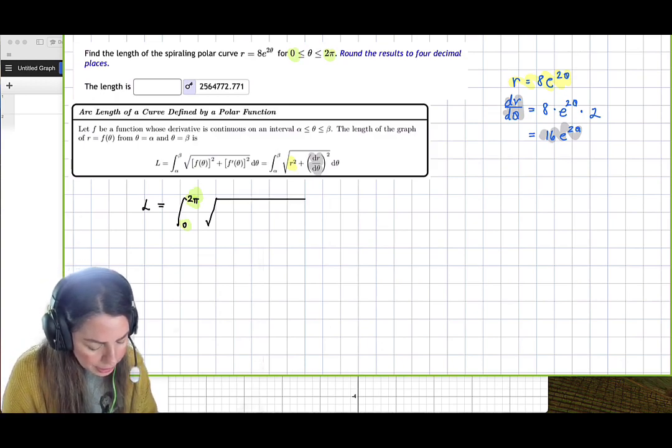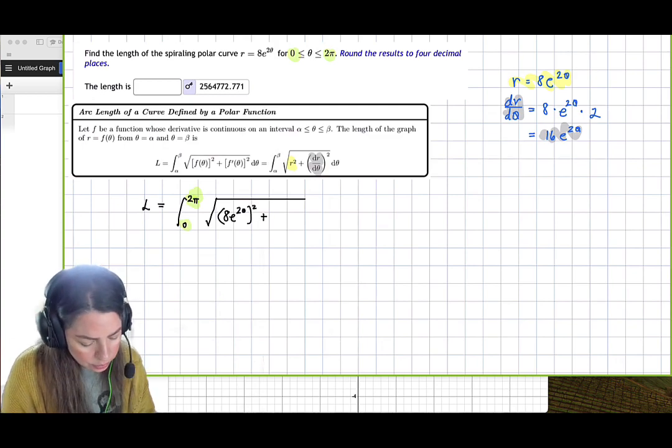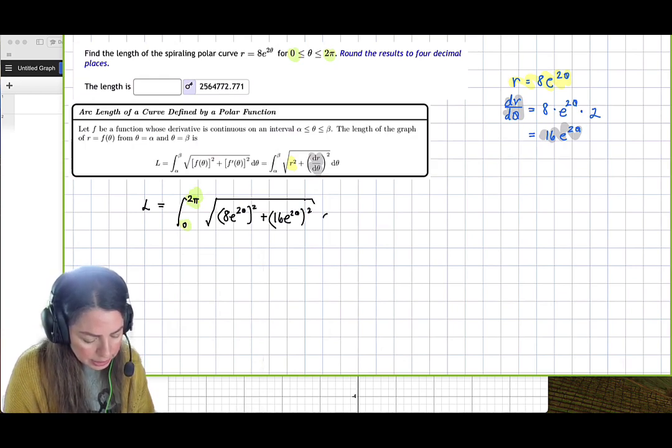And then we get 8 e to the 2 theta squared plus dr d theta, which is 16 e to the 2 theta squared, d theta.